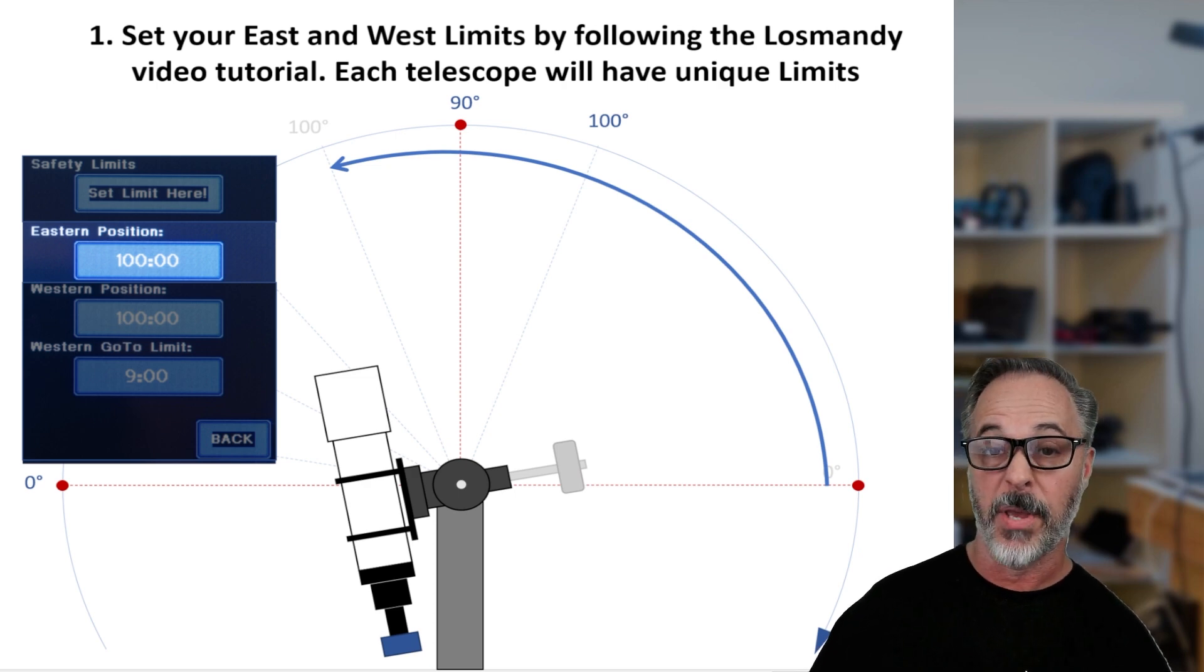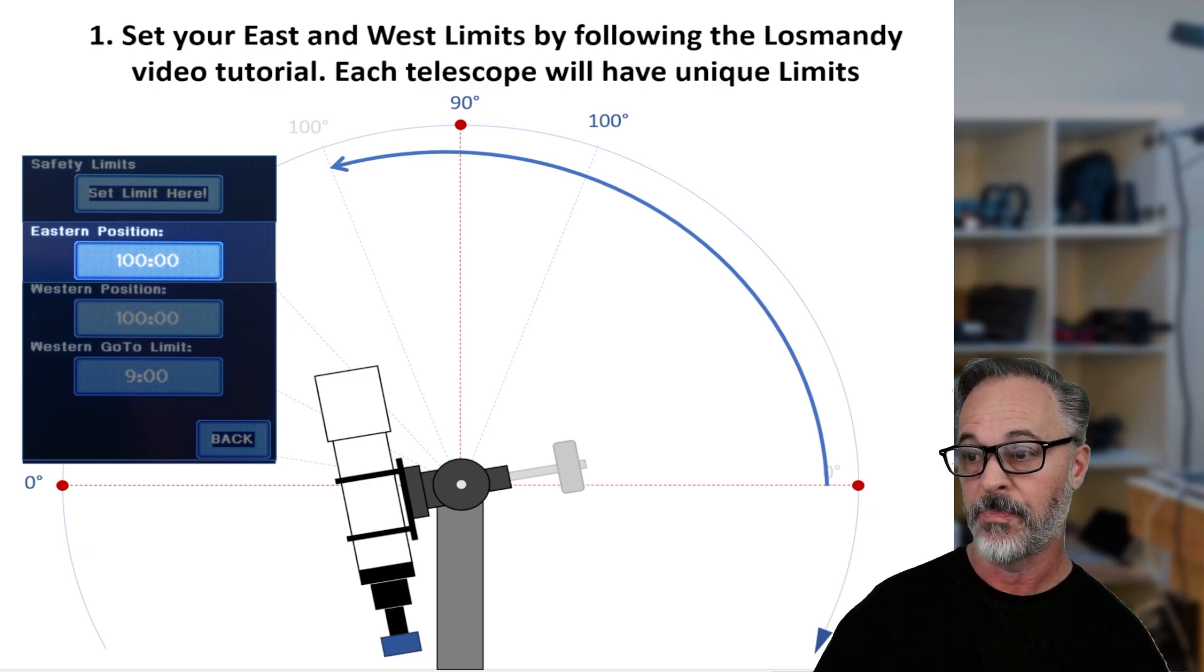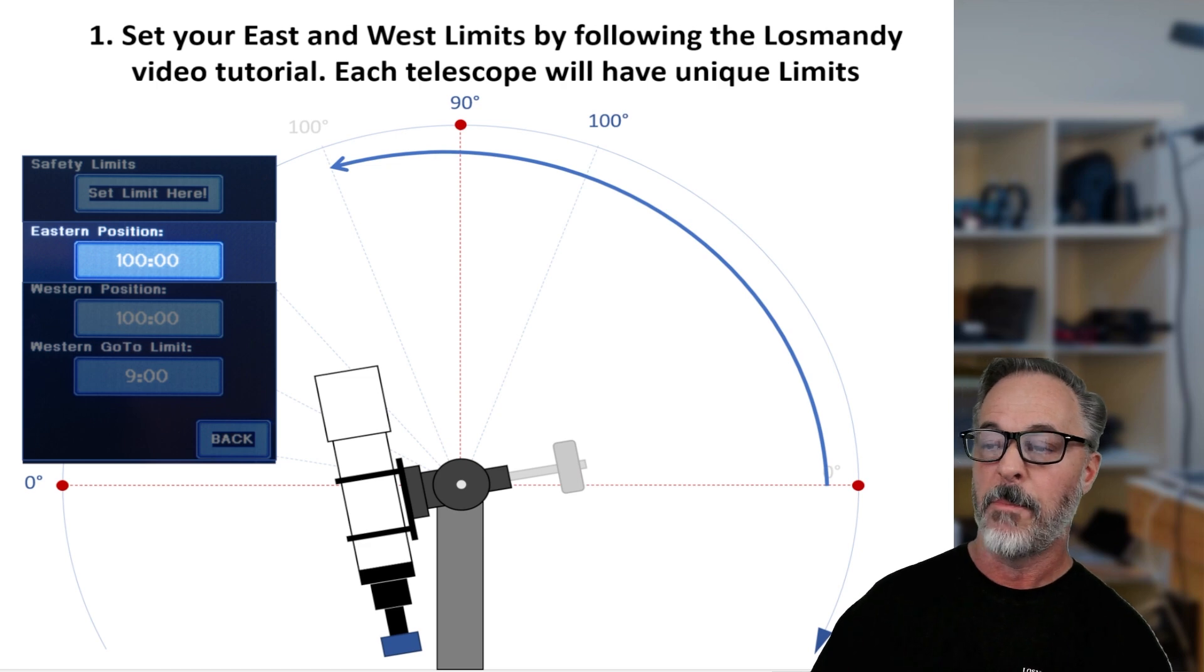So your telescope might be longer, it might be shorter. You might have a big camera, a small camera, all those things play a role in setting your limits. But I'm going to give you a picture here showing you kind of the results of that particular video tutorial.